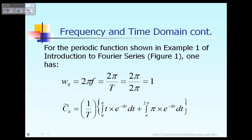Now, for this same example, the angular frequency ω₀ is equal to 2πf, where f is the frequency. The frequency f is equal to the reciprocal of the period T. In this case, T is equal to 2π, and therefore ω₀ is equal to 1.